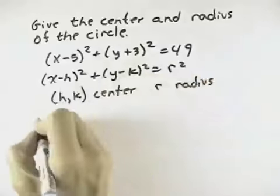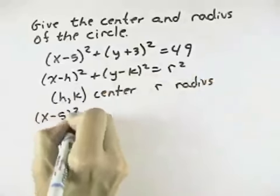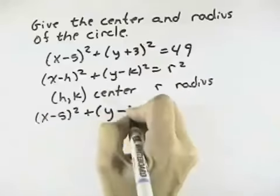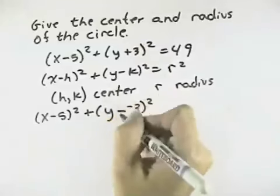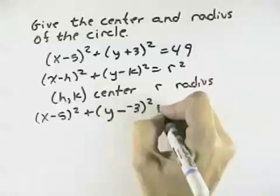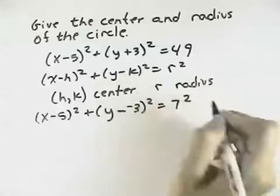So putting it in the form of subtraction, we'd have x minus 5 squared plus y, we'd have to make this a double negative to be the same as y plus 3, that's y minus a negative 3 squared. But the standard form has subtraction there. And 49 is the same as 7 squared.